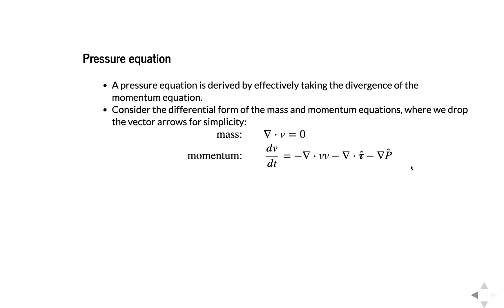Okay, so let's look at a pressure equation. For convenience, we'll do this within the differential form. So the mass is del dot v is zero, and momentum is dv dt is minus del dot v v minus del dot tau minus grad p. And here we're just leaving off the arrows for convenience again, for simplicity.